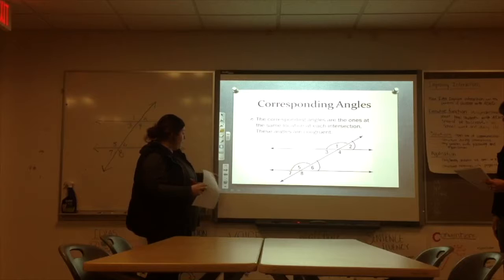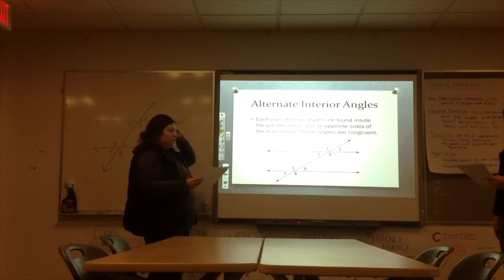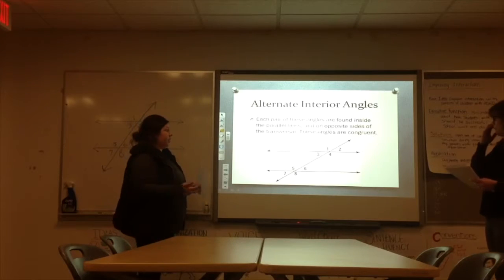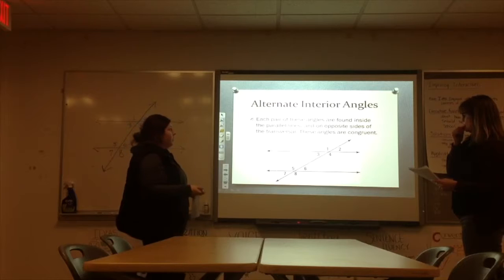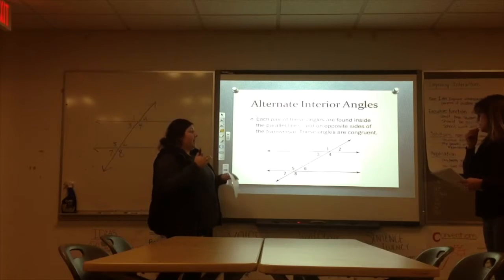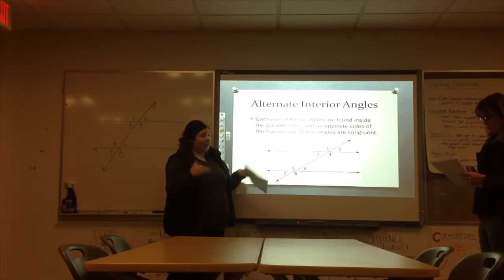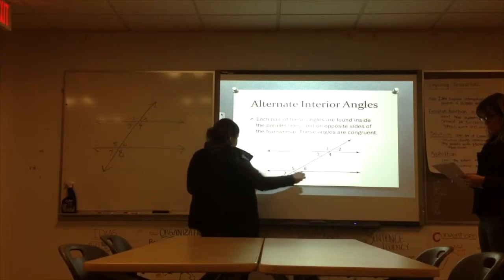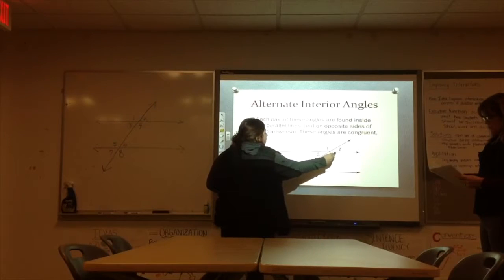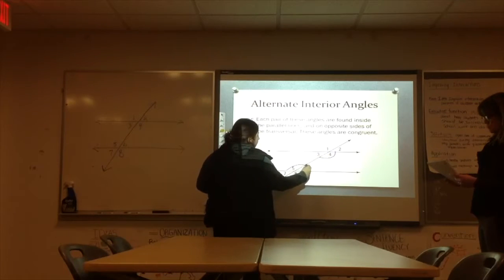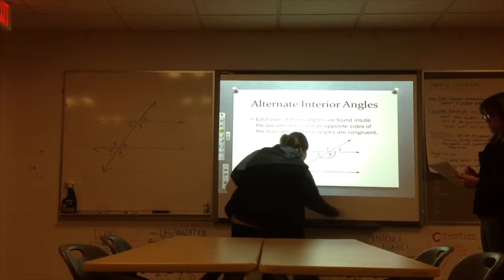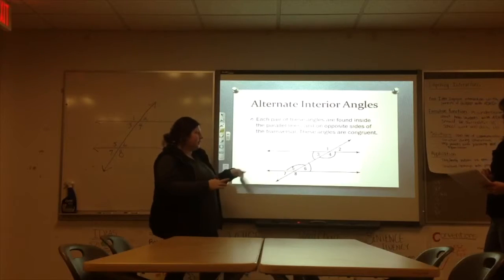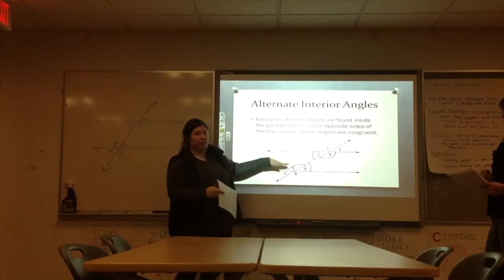Alright, so next, back to back, we're going to have alternate interior and alternate exterior. So we're going to look at interior first. Each pair of these angles are found inside those parallel lines. Interior, think inside. So that is going to be angles 4 and 5, and then angles 3 and 6. They're interior, so they're in between the parallel lines.